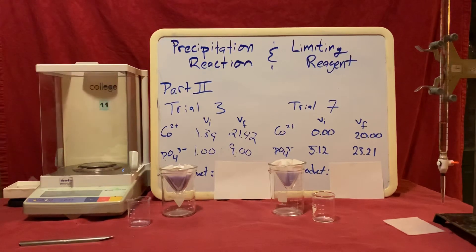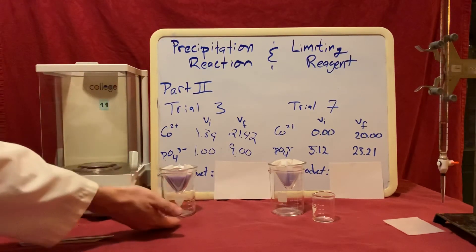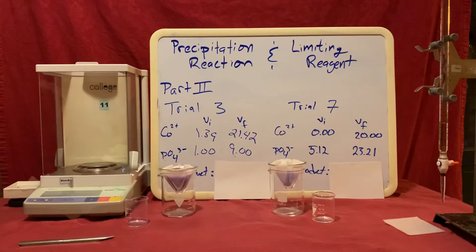Once they had lost all of the liquid, once all the supernatant had been collected down here, I would take each one of these filter papers and place them in a drying oven in order to drive off all the water so we could collect just the solid.